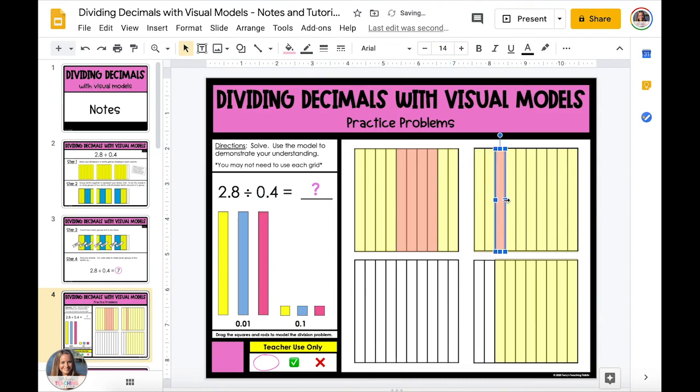It's going to turn orange because the two colors are blending together. Then we're going to keep going until we have split all of the yellow area into groups of four tenths. When you're finished, you want to count up how many groups of four tenths you have and that is your answer to 2.8 divided by 0.4, which is seven.